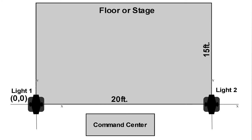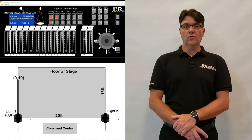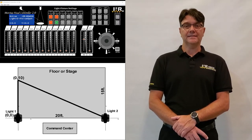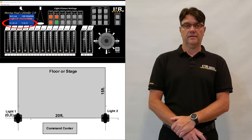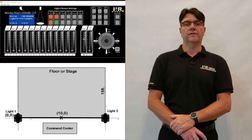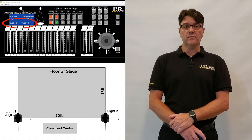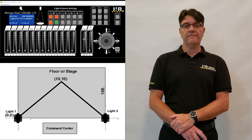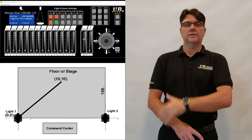For example, if the reference point was light 1, then for coordinates X=0 and Y=10, all lights will aim at 10 feet in front of light 1. For coordinates X=10 and Y=0, all lights will aim 10 feet to the right of light 1. For coordinates X=10 and Y=10, all lights will aim 10 feet to the right and 10 feet in front of light 1 — that is, at 45 degrees.